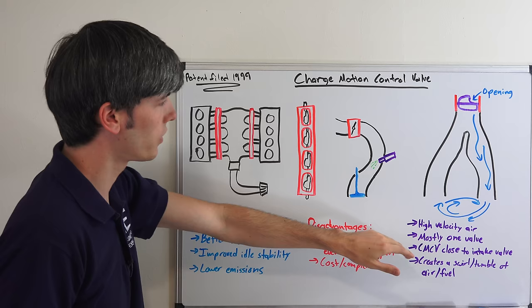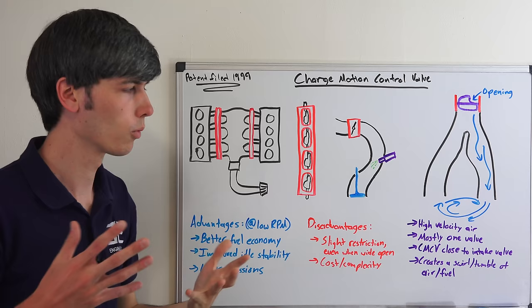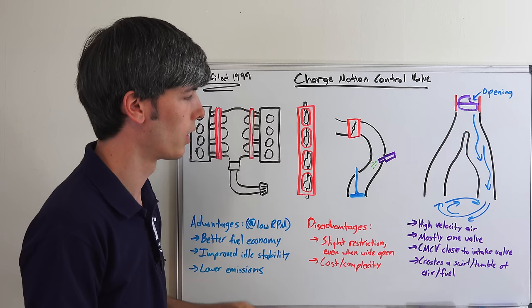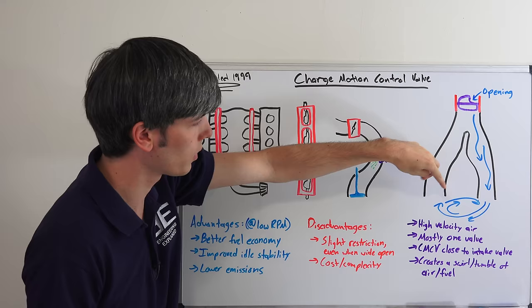And so you want to position the charge motion control valve as close as possible to the intake valves. Now obviously there's going to be packaging restrictions which force you to bring that back up, but you want it as close as possible for maximum efficiency. And so what this does is it creates this swirl and tumble of the air and fuel, and so that's going to give a better mixture.